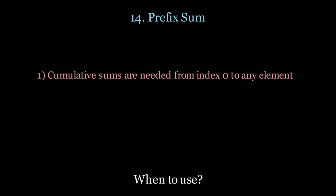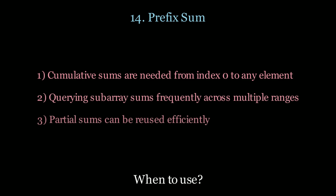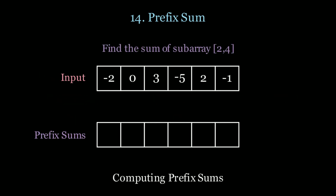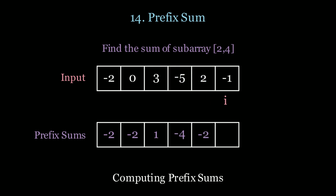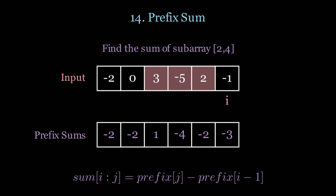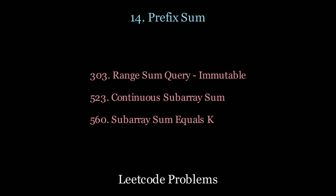Now let's look at prefix sums. Use prefix sums when you want cumulative sums from index 0 to any element, when you want to query subarray sums frequently across multiple ranges, or when you have partial sums that can be reused efficiently. For example, if you want to find the sum of subarray 2 to 4 — or multiple queries like 1 to 5, 0 to 3, etc. — you calculate the prefix sums table once, then use the formula: sum(i, j) = prefix[j] − prefix[i−1], giving constant-time answers per query. For more practice, look at the following LeetCode questions.